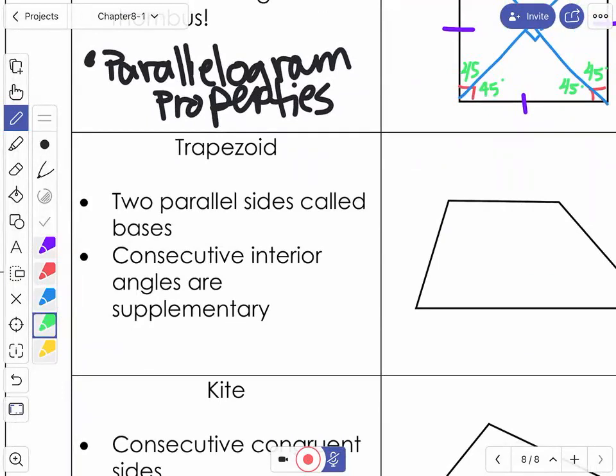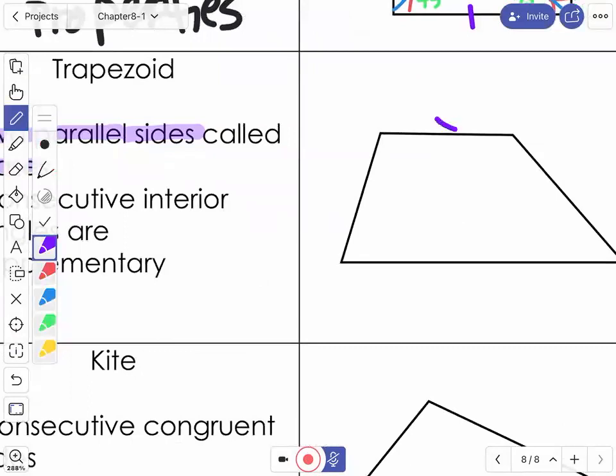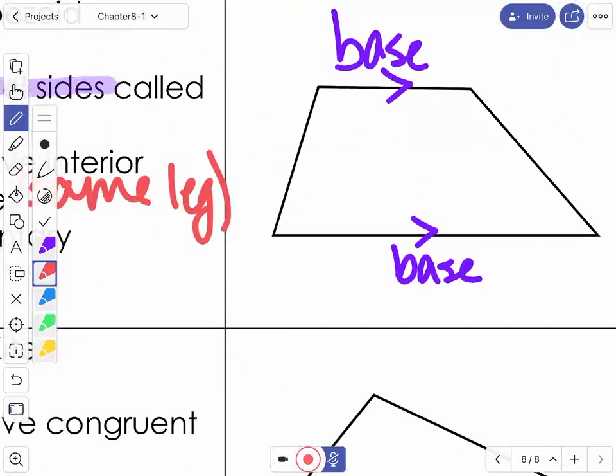Our next group of quadrilaterals that we looked at are the trapezoids. And this has two pair of parallel sides, which are the bases. So find the sides that are going the same direction. Those are the bases. So consecutive interior angles for this one will be supplementary, meaning when they're on the same leg. They will be supplementary. The non-parallel sides are going to be your legs. And so when they're on the same leg, that is the one that are supplementary.